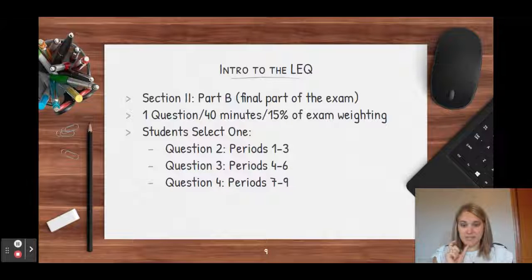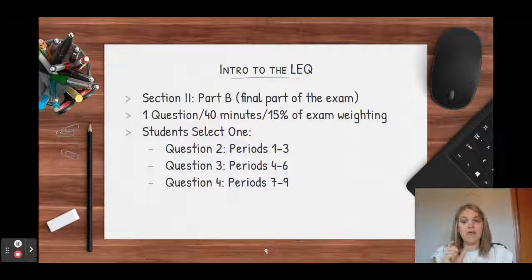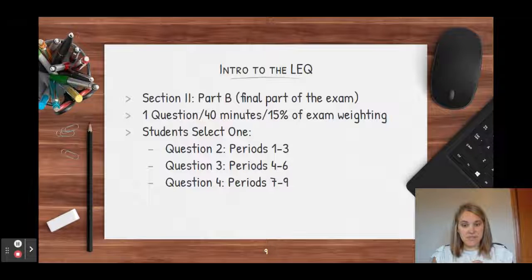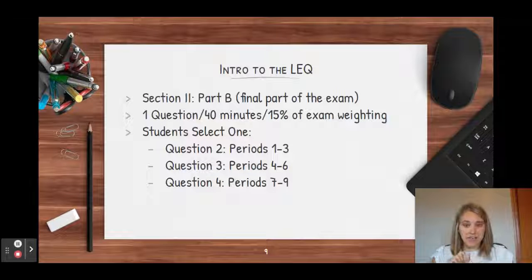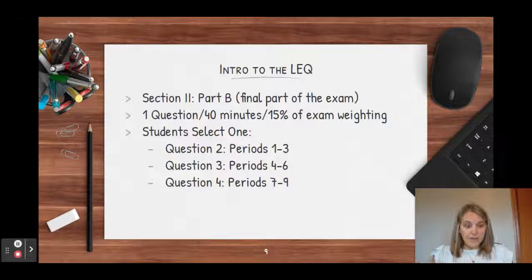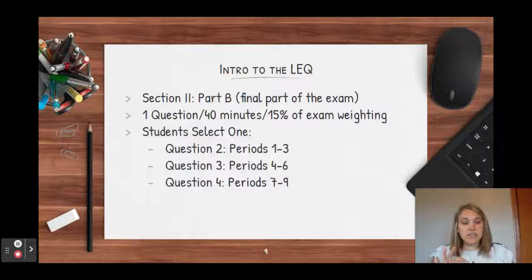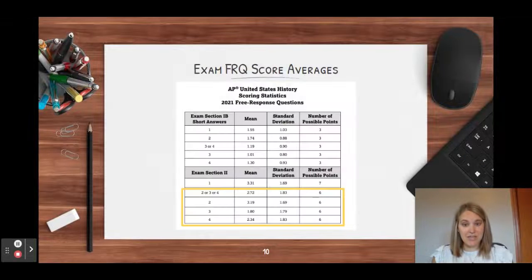For question two, it will take place sometime in periods one through three. Three will cover four through six, and then question four covers seven through nine. What happens is you're given a topic from each of those periods, but it usually uses the same skill in each question.